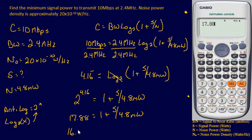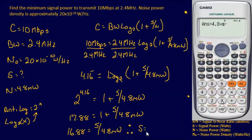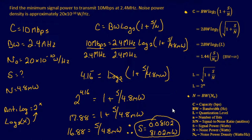Multiplying both sides by 4.8 milliwatts: signal equals 16.88 times 4.8 milliwatts, which gives 0.08102 watts, or 81.02 milliwatts. That is our final answer for the minimum signal power. By learning to manipulate these equations and work backwards, you can find answers quickly and easily. Hopefully that's enough information. If you have any questions, feel free to ask, and have a good day.